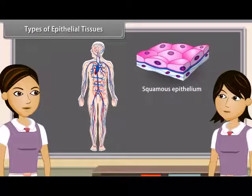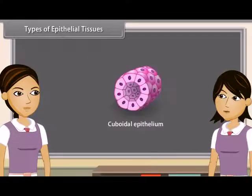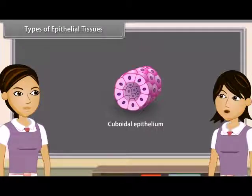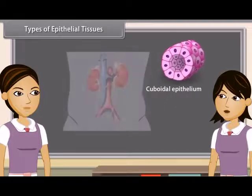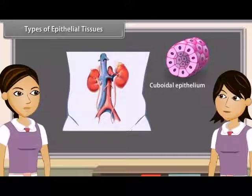It is also known as pavement epithelium. In cuboidal epithelium, cells are cube-like — they appear square in section but hexagonal on the free surface. It is found in kidney tubules, thyroid vesicles, salivary, sweat, and exocrine glands.